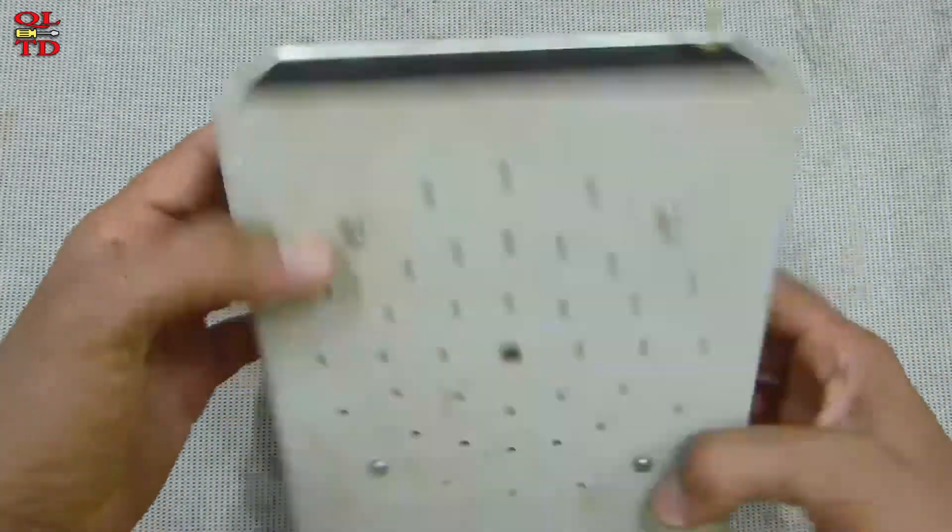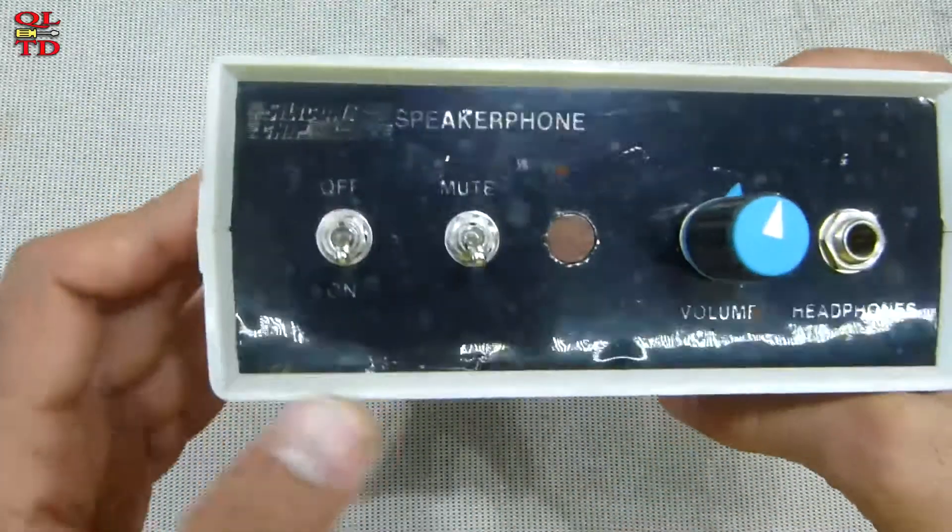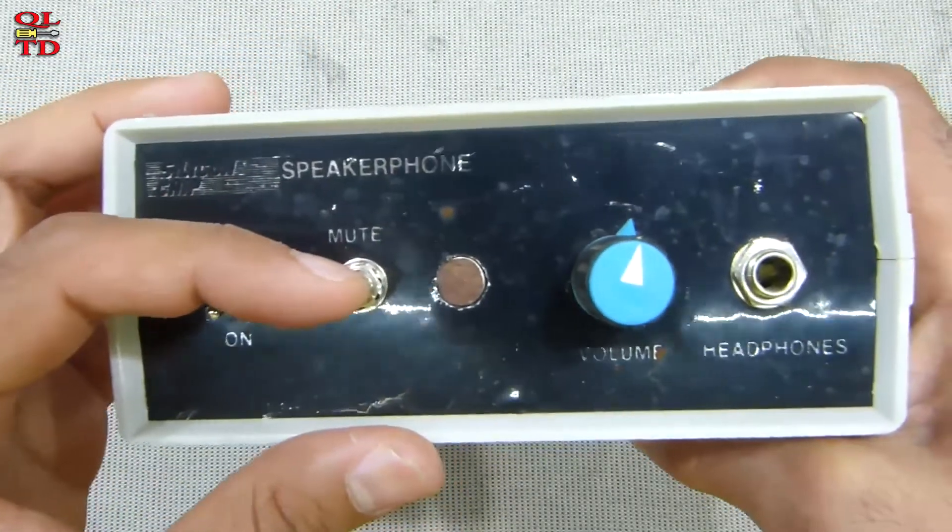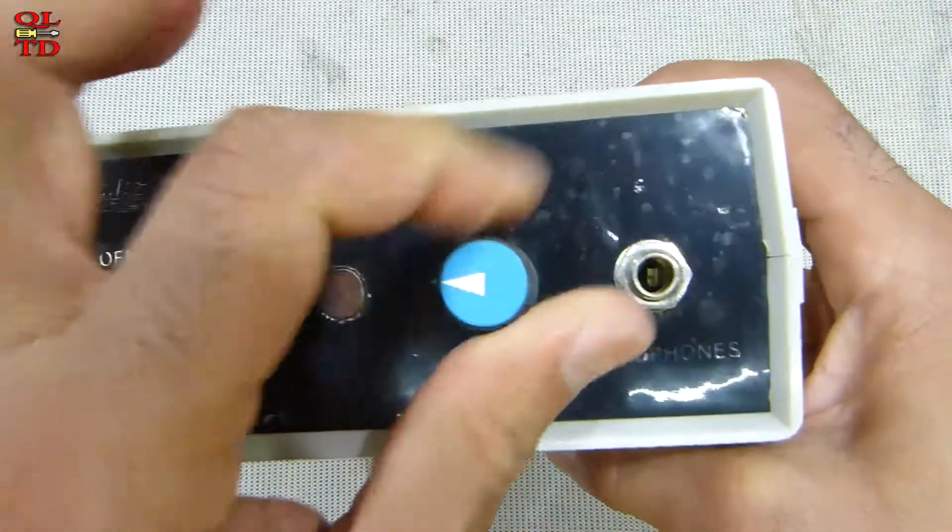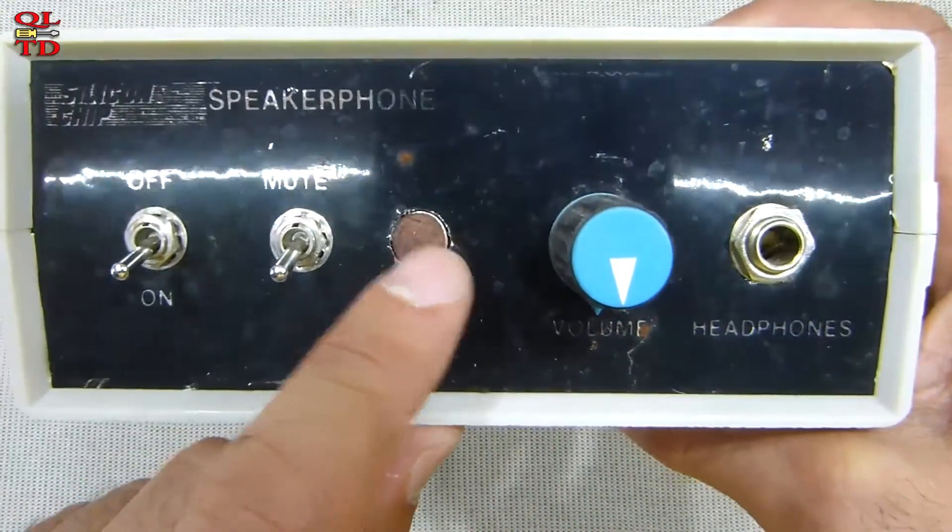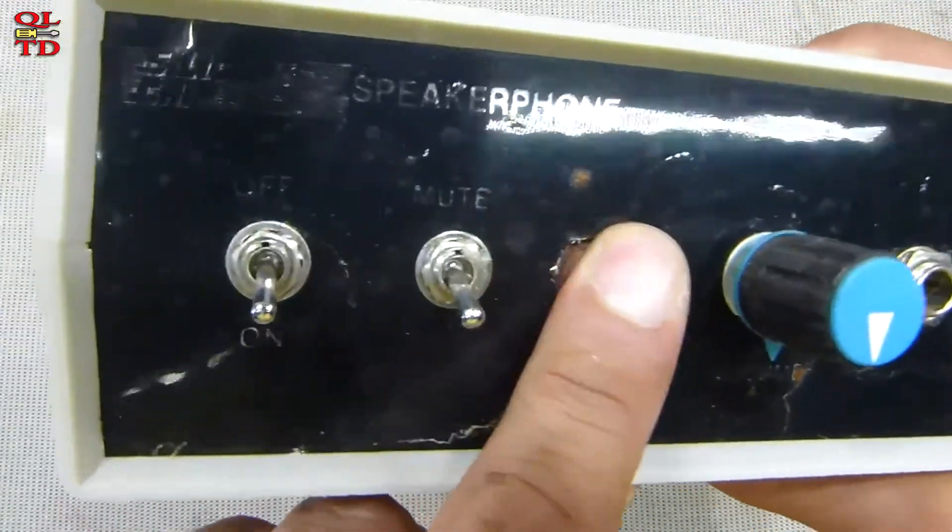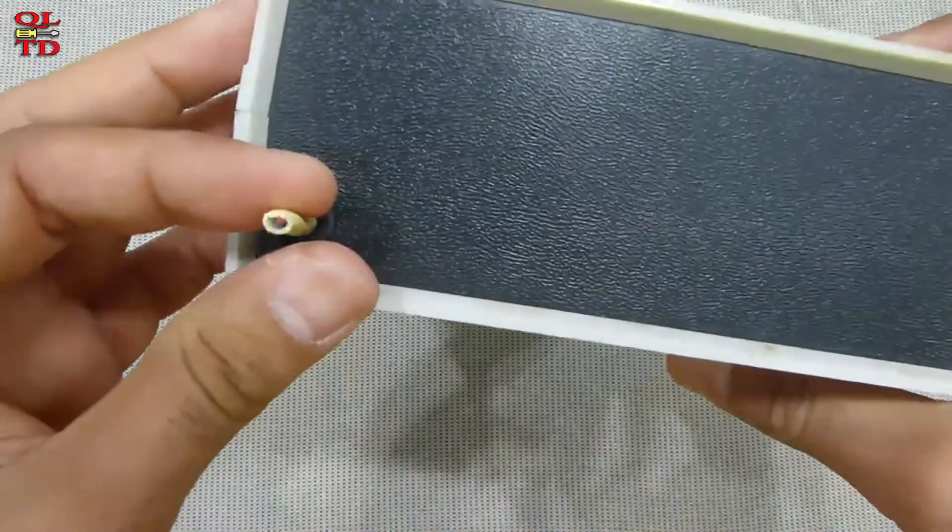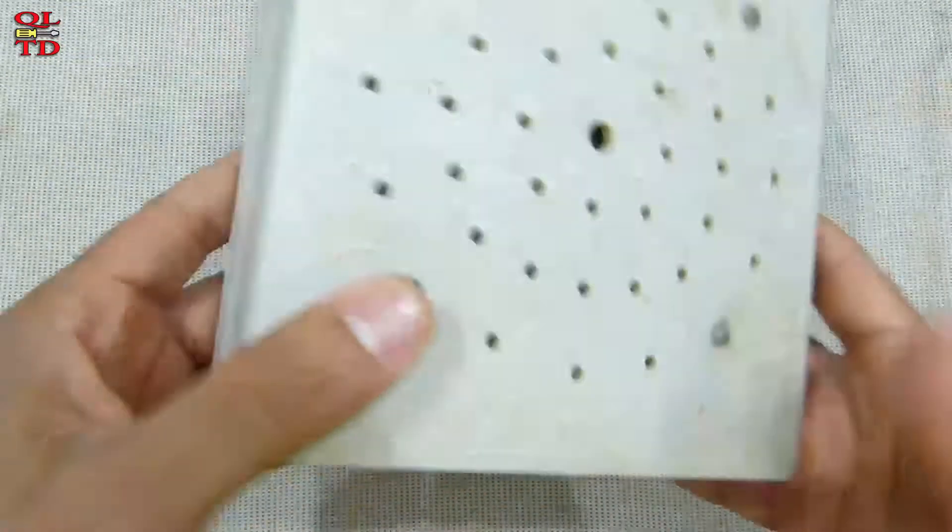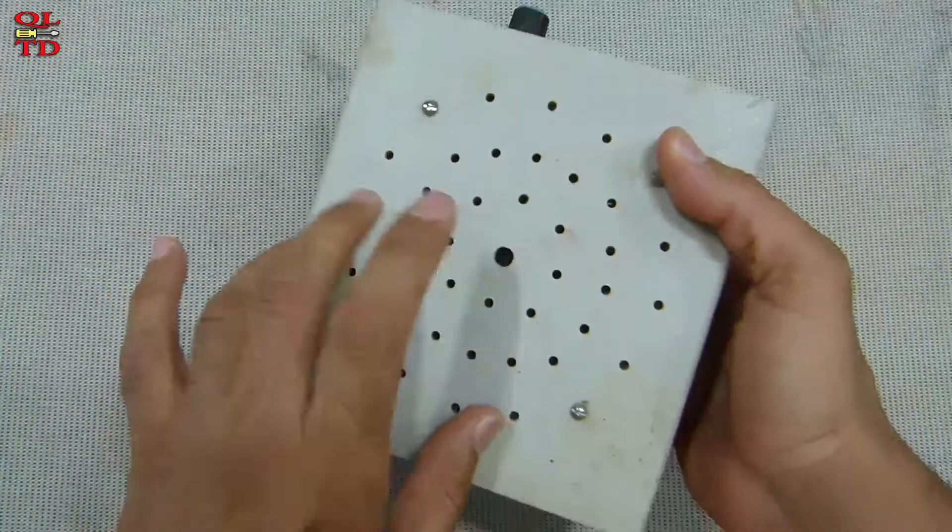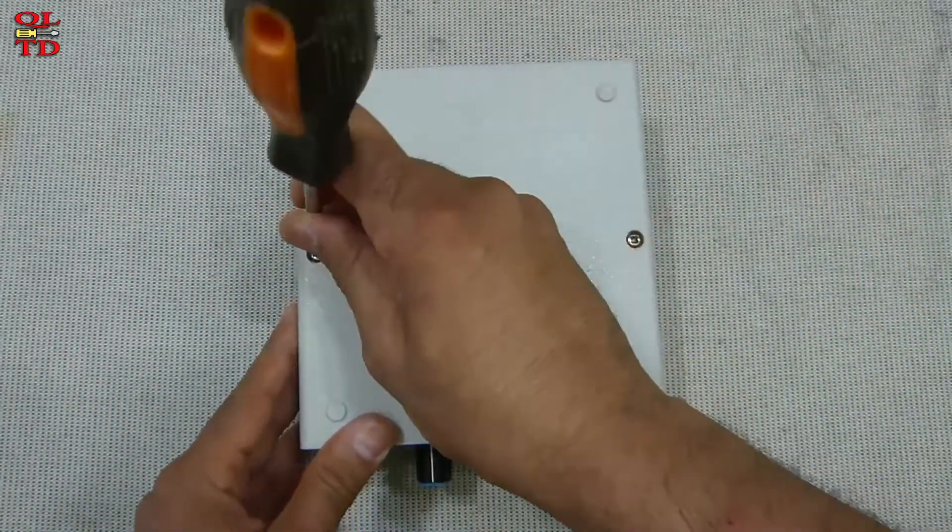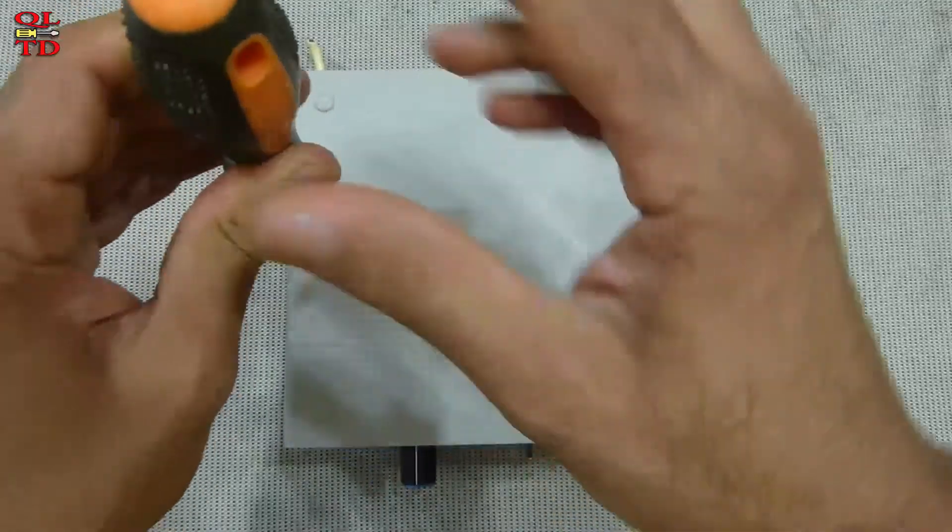Here we have an on-off switch, a mute switch, a volume control, and a headphone jack. This is a microphone by the look of it. In the back, we have just phone line input, probably, and it looks like here we have a big speaker. So let's open it and see what's inside.